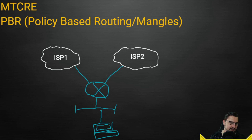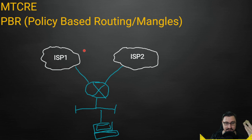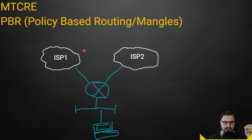Your computer sends an HTTP request, it gets to the router, and the router makes a decision based on what it sees. If there's a mangle rule that says 'if it's HTTPS, push it out over this ISP instead of the default route,' that's exactly what policy-based routing does. You can make routing happen at the firewall level, independent of default routes.